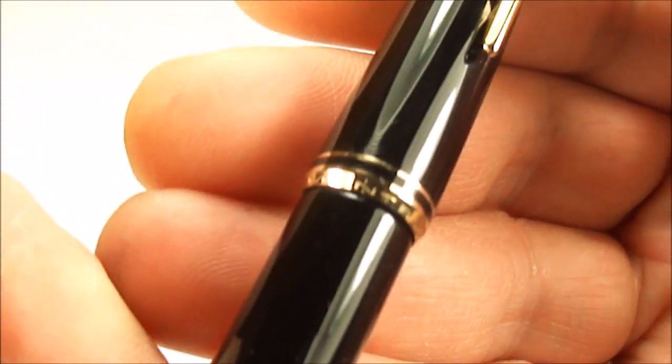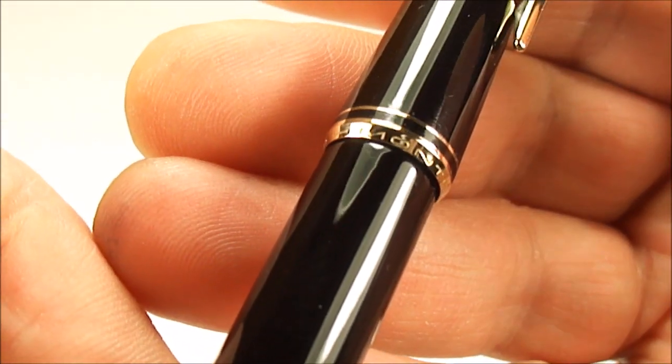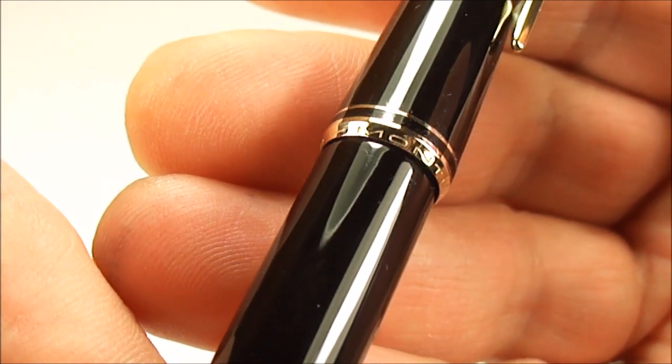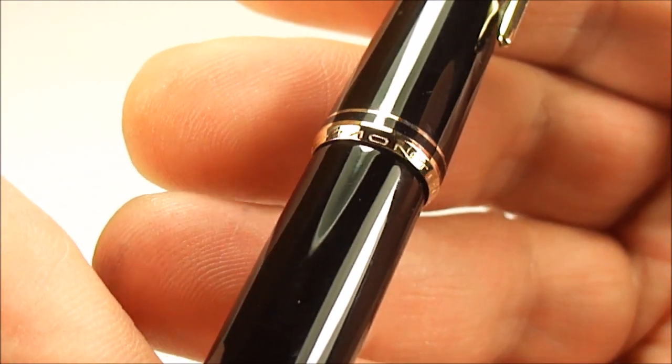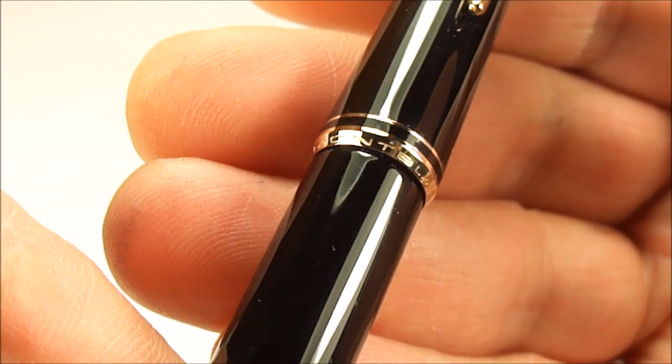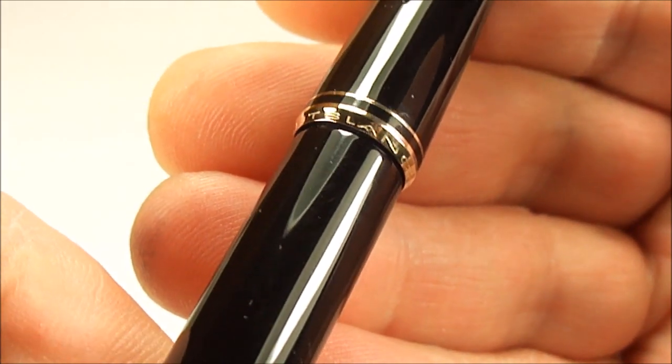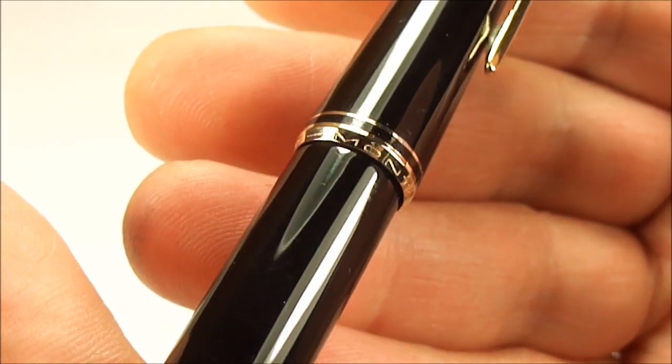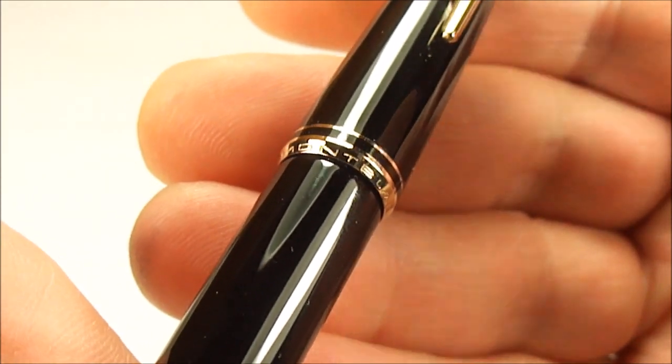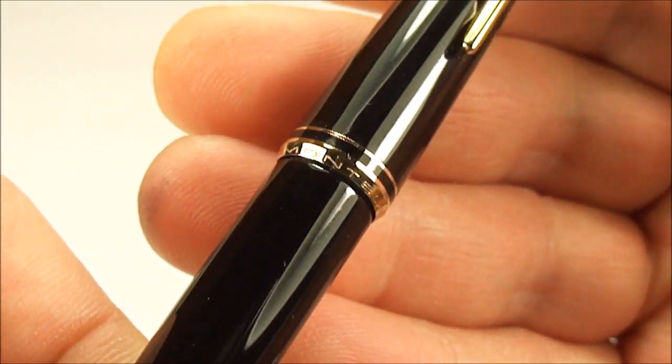Now if I bring it up a little bit close and twirl it round for you, you'll see that it reads Montblanc and then it has the number 22. So nice and easy pen to identify because it tells us on the cap band.